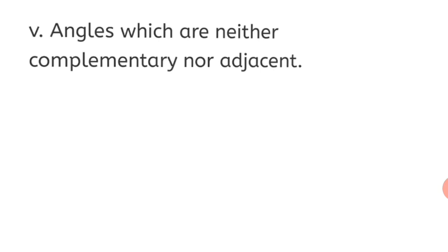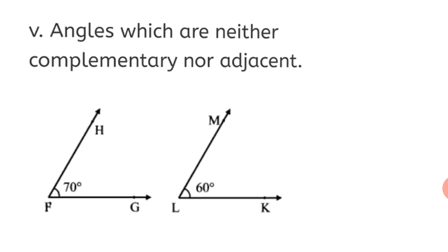Question 5: Draw angles which are neither complementary nor adjacent. Not complementary means their sum should not be 90 degrees, and not adjacent means we draw them separately. This is possible. For example, a 70-degree angle and a 60-degree angle: their sum is 130, so they are not complementary, and since they have no common arm they are not adjacent. Name the angles, put arrows at the ends, and write the measures inside.